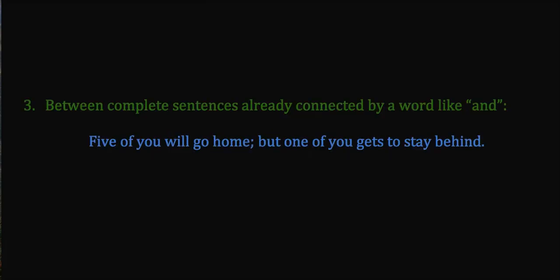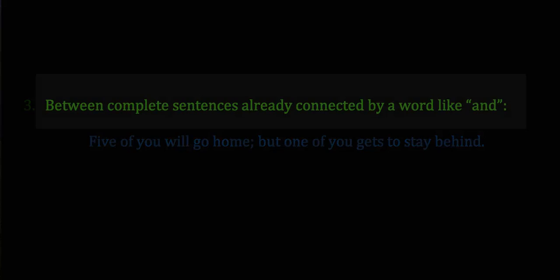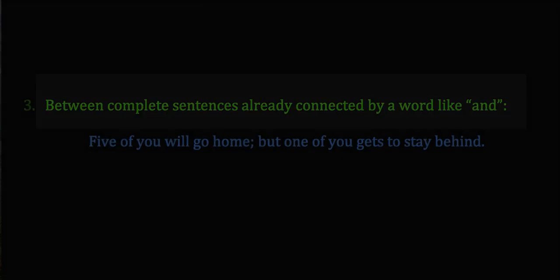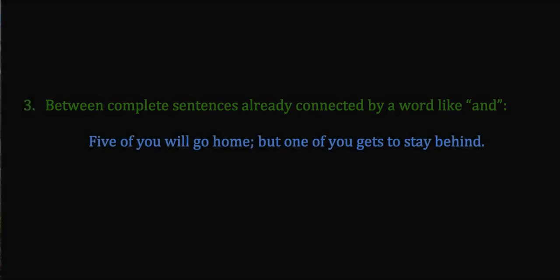The final misuse of a semicolon is between complete sentences already connected by a word like 'and.' The semicolon is essentially replacing one of those words — you don't want it in addition to that word. Look at this sentence: 'Five of you will go home; but one of you gets to stay behind.' In this case, we have the semicolon and the word 'but' — no, you don't want that. You want a comma and the word 'but.' Comma and 'and.' Comma and 'or.' Not a semicolon, which is essentially a period.